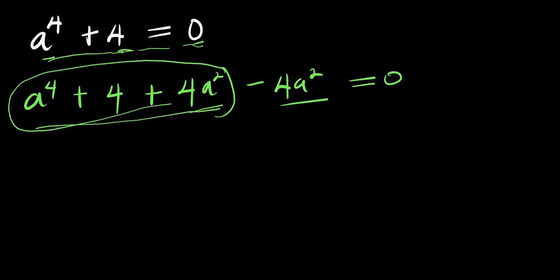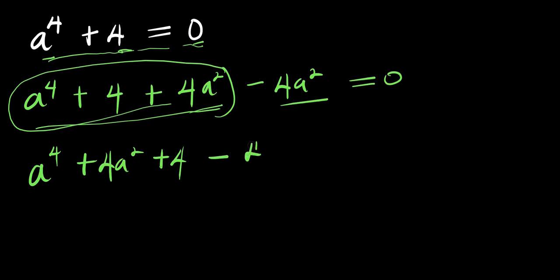At this point we can rearrange. We have a⁴ plus 4a² plus 4, then minus 4a², and this equals 0.